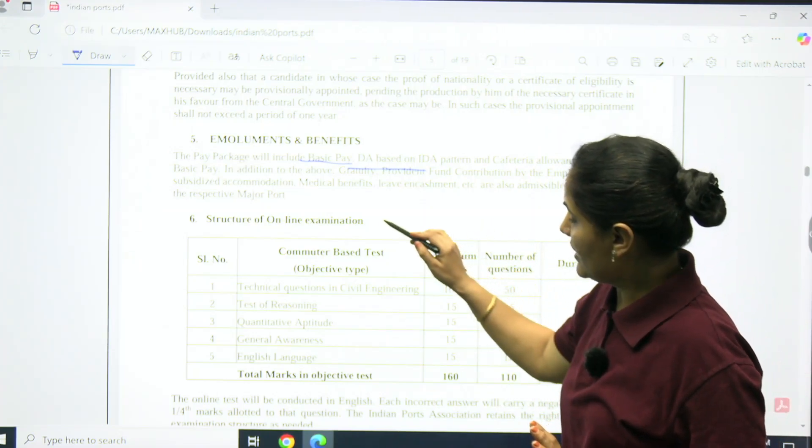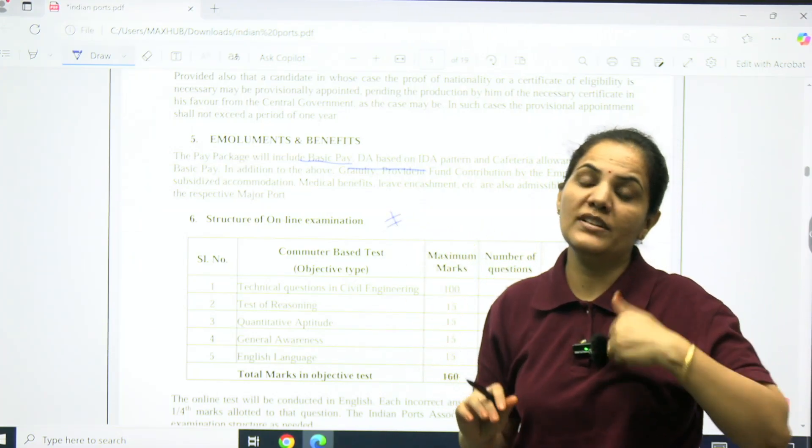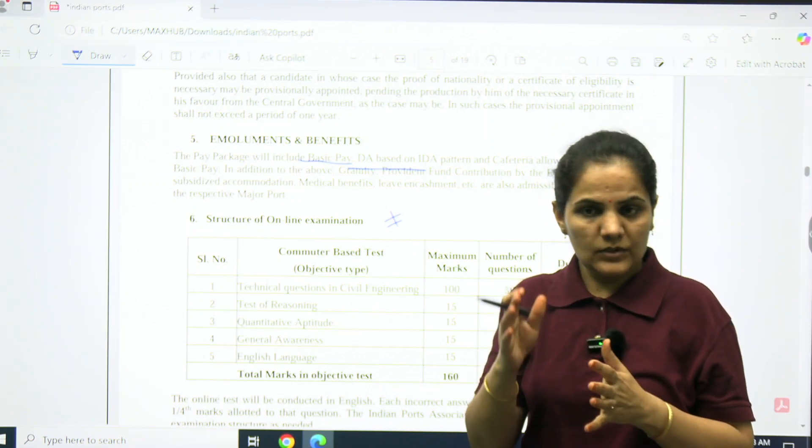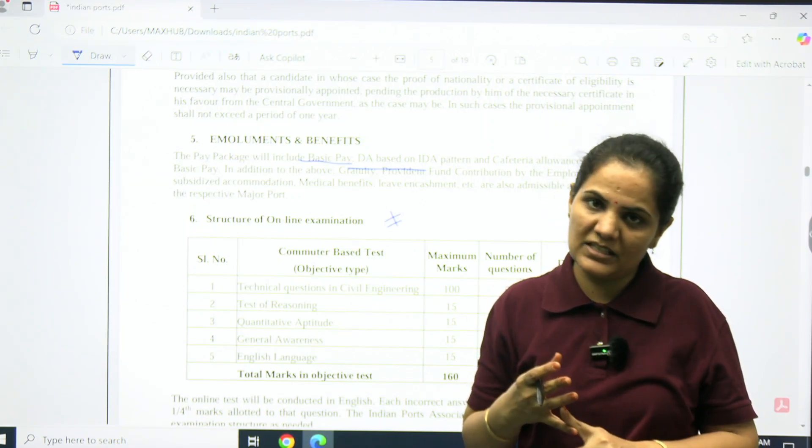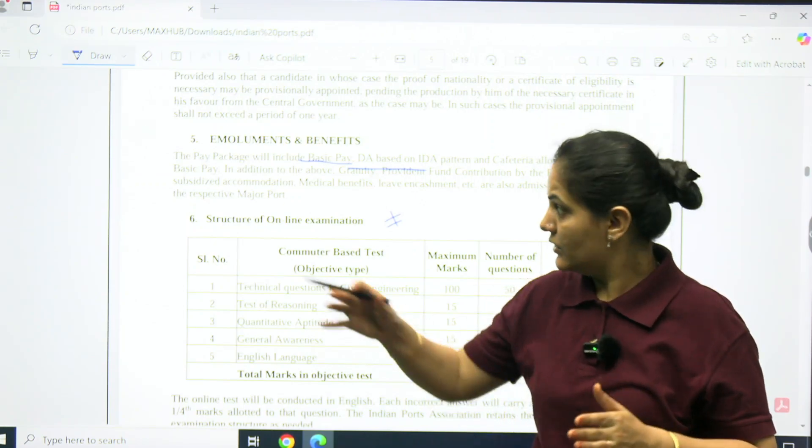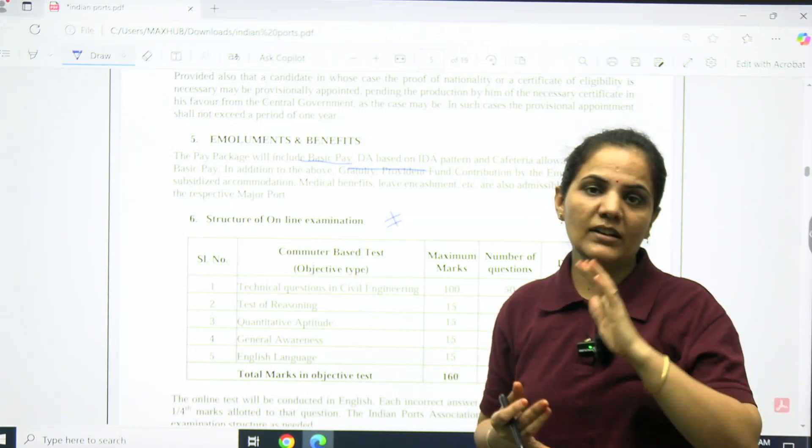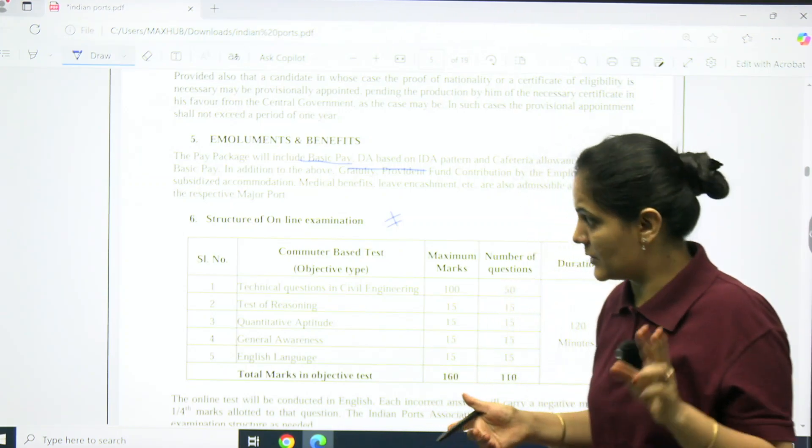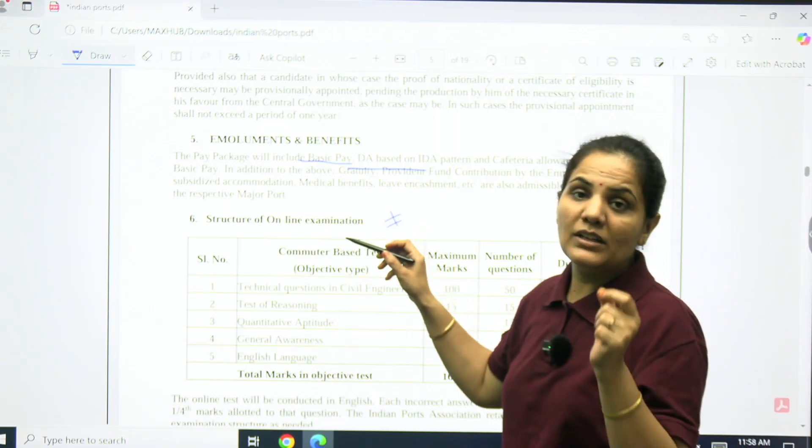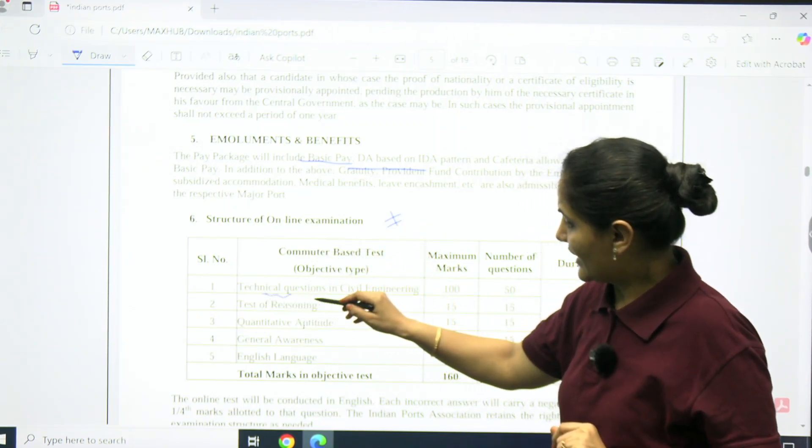What is the procedure of recruitment? First of all, you should have B.Tech with minimum 60% marks for the junior post. For the other one, you want minimum two years experience, plus they will have their online examination.